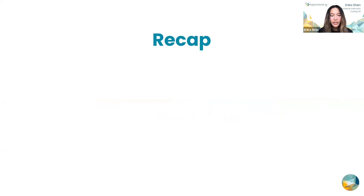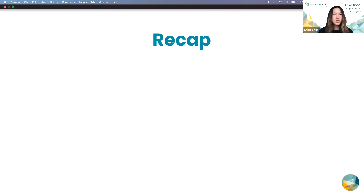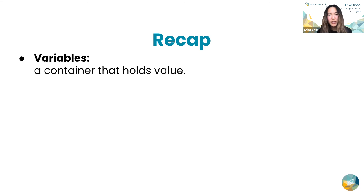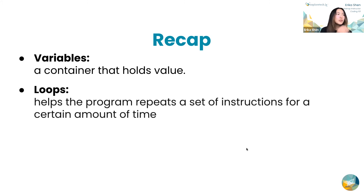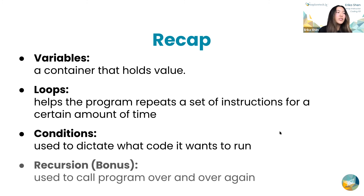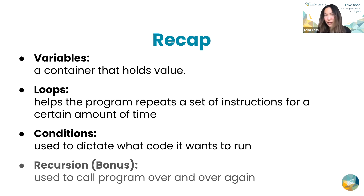Here's a quick recap of all the things we went through. Variables are just a container that holds a value — like x and y from math. Loops help the program repeat a set of instructions for a certain amount of time; the word 'repeat' is what you use to make loops. Conditions are used to dictate what code runs — you saw this as the if-then blocks in your levels. And recursion is what's used to call a program over and over again. If you didn't get to that, you have the coding one-on-one guide so you can go through it later on your own time.